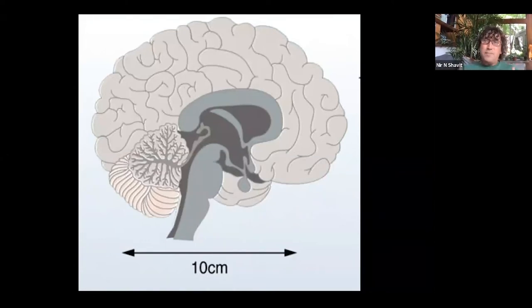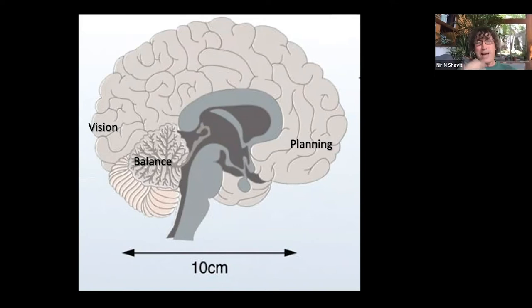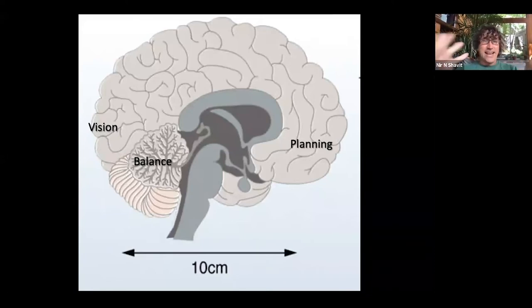Why is this? Part of the reason is the sheer size of the mechanics of this system. If you look at an image of a brain, a lot of you might know that in the brain there are regions — vision region, planning region, balance region. At the level of an fMRI machine, you've probably seen pictures of these regions lighting up. And that's the kind of view we have of a functioning brain.